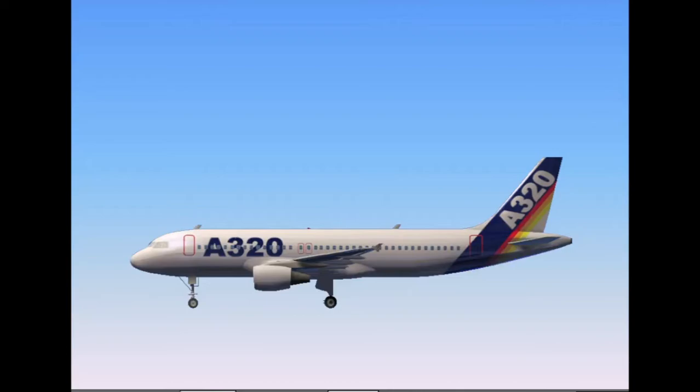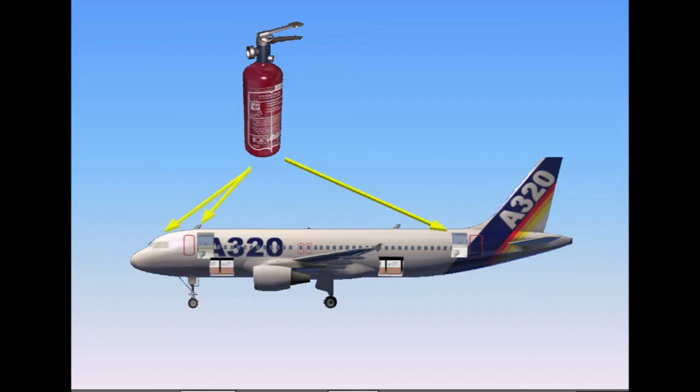The A320 has fire detection and extinguishing systems for the engines and APU, smoke detection in the avionics bay, smoke detection and fire extinguishing systems in the cargo compartments and lavatories, and portable fire extinguishers for the flight compartment and the cabin.